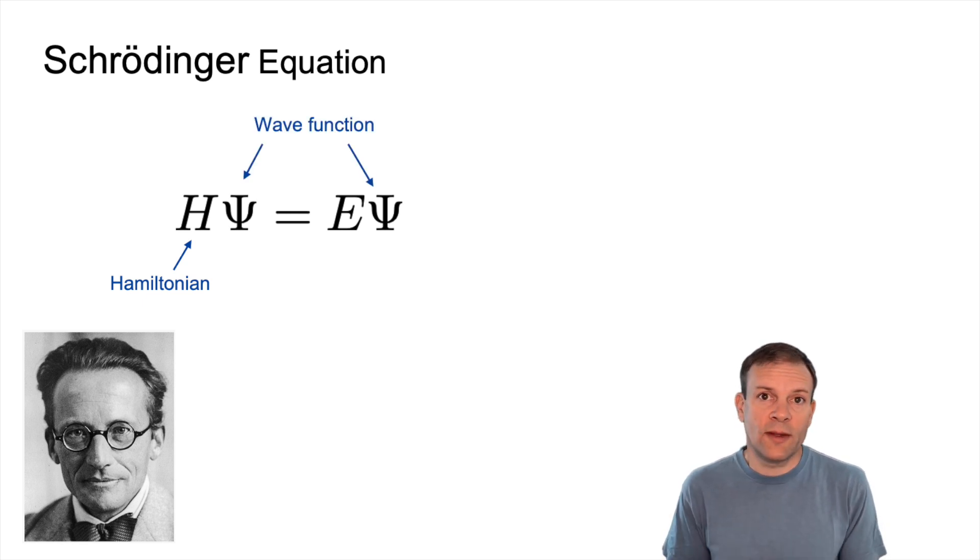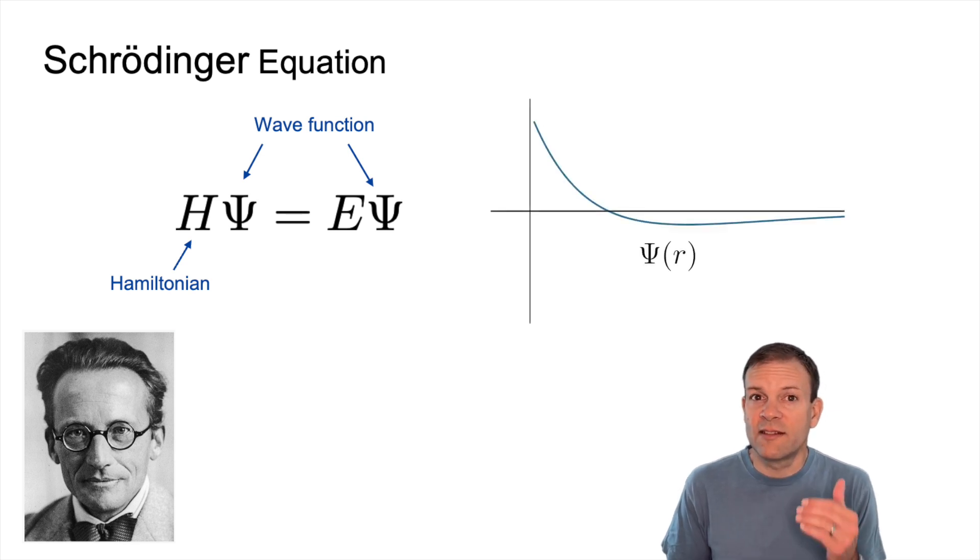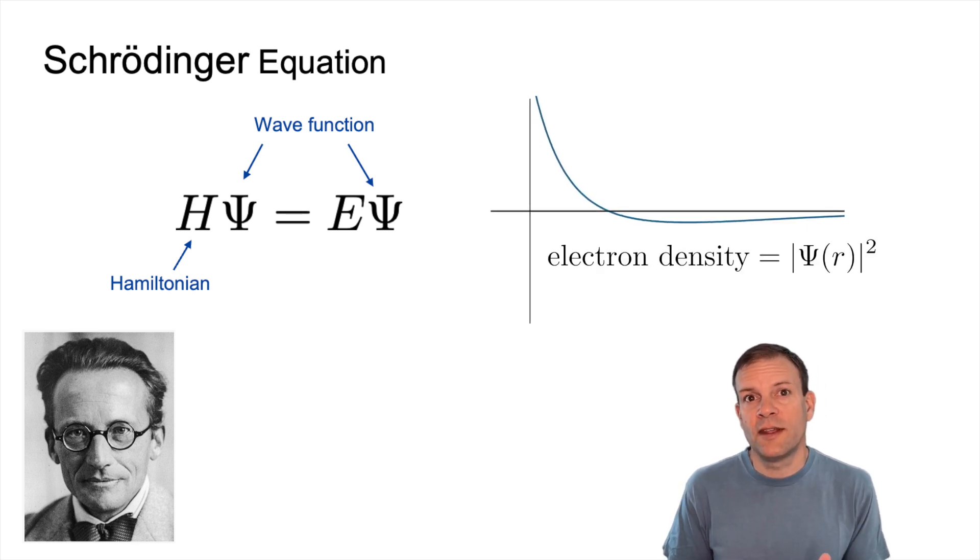We have psi, which is a wave function, and the main property you need to know about the wave function is that if you take the square of its norm, that's equal to the electron density, which is a probability of seeing an electron at a certain position, R.